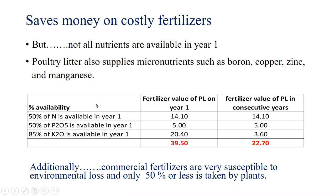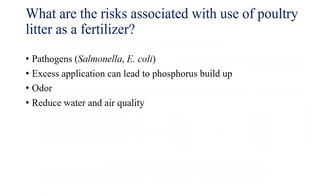Keep in mind that poultry litter also supplies other micronutrients such as boron, copper, zinc, and manganese, which were not accounted for in this calculation. Additionally, most research states that commercial fertilizers are only about 50% efficient in nitrogen uptake, meaning the rest is lost. So litter not only provides nitrogen, phosphorus, and potassium but is also a source of boron, copper, zinc, and manganese.